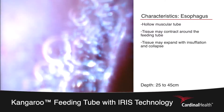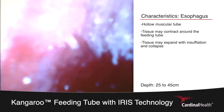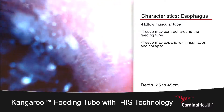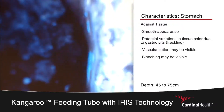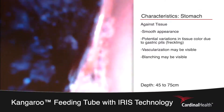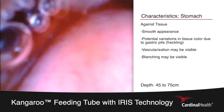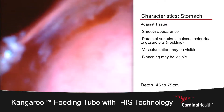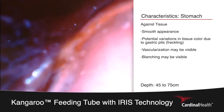Once we have determined that we are in the esophagus, we will continue to progress down to around the 50 centimeter mark. We will be looking for the cavernous structure of the stomach and those large irregular rugal folds. The tissue of the stomach differs from that of the esophagus, which can be easily visualized by the smooth tissue and the presence of gastric pits, which resemble freckling.